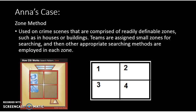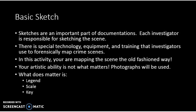In Anna's case, the method we used to search the crime scene was the zone method because we had an easily defined zone, such as a front foyer, or it could be a bedroom or a kitchen. When you're searching a place like that, you break the area up into different zones, as seen in the picture — like in a bedroom, zone 1, 2, 3, or 4. You're going to learn about some more crime scene search methods, but in Anna's case we used the zone method.